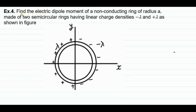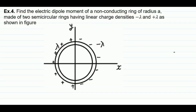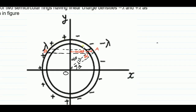The next problem: find the electric dipole moment of a non-conducting ring of radius A made of two semi-circular rings having linear charge densities −λ and +λ as shown. To determine this, we consider an elementary part of length DL on both sides of the y-axis. The charge on this part is DQ.